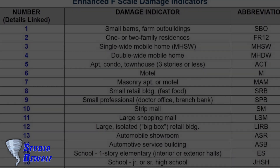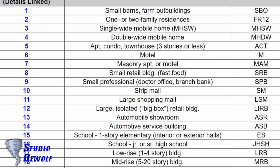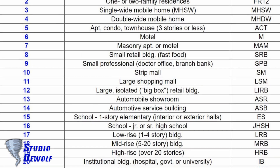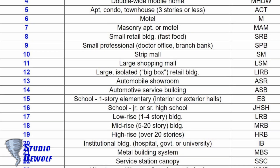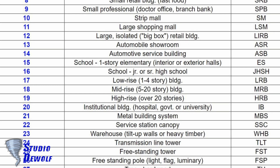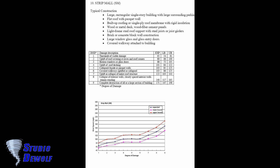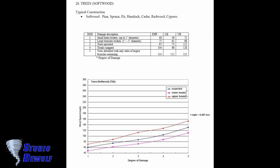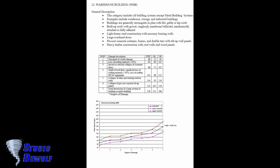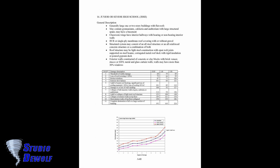The EF Scale currently has 28 damage indicators, or types of structures and vegetation, each with a varying number of degrees of damage. Larger degrees of damage done to the damage indicators correspond to higher wind speeds.